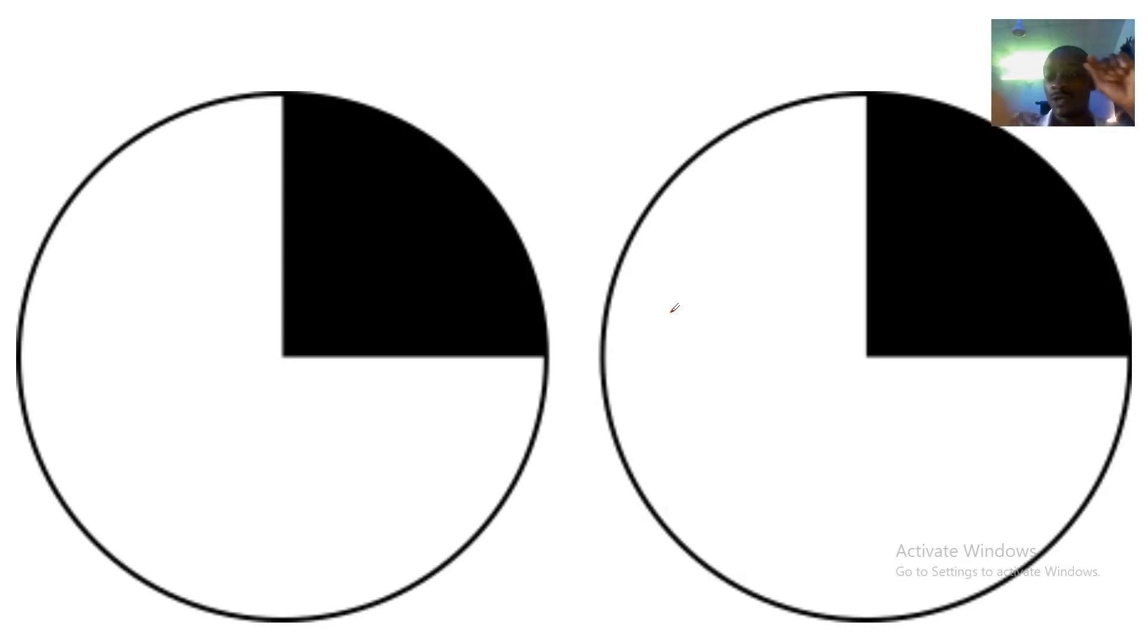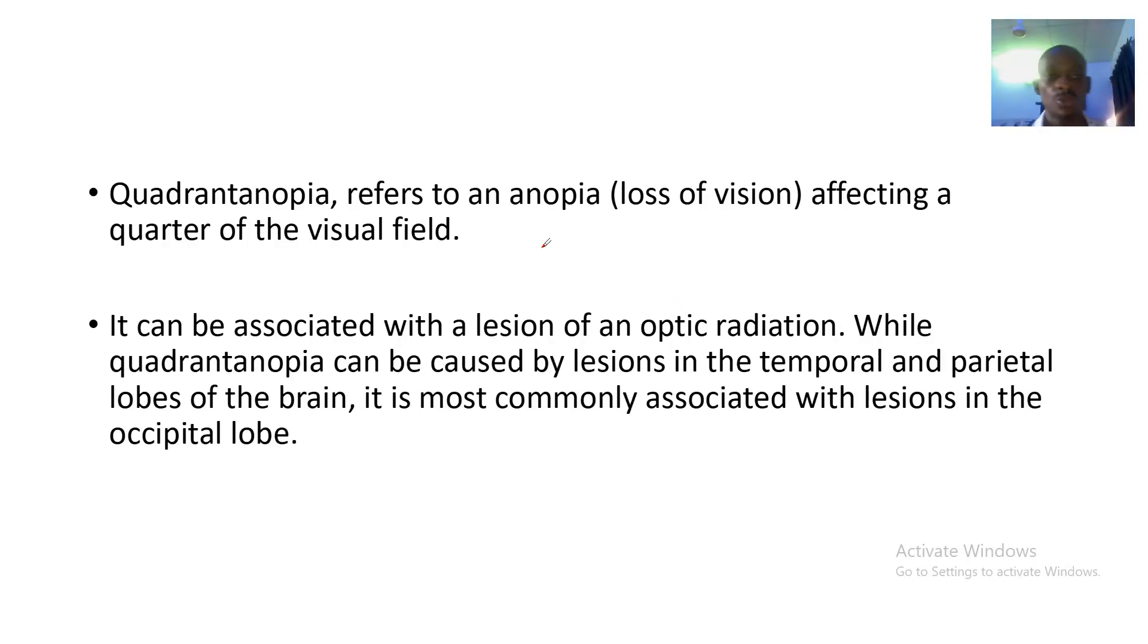One fourth of the visual field is affected. So where is the lesion that causes this? Quadrantanopia refers to an anopia, a loss of vision, affecting a quarter of the visual field.